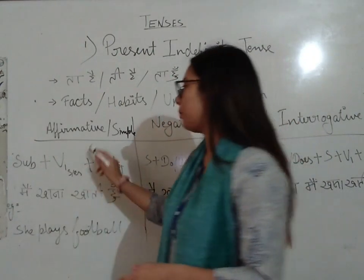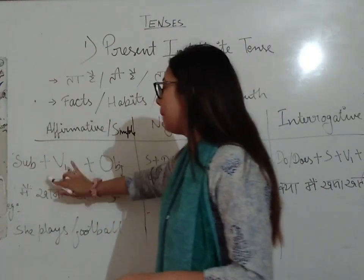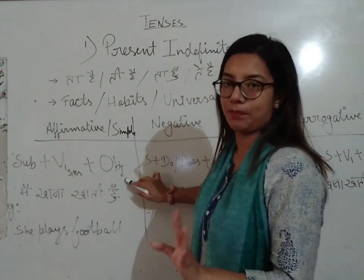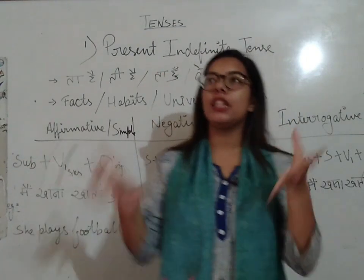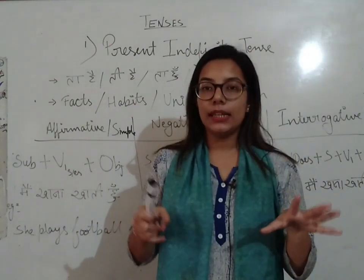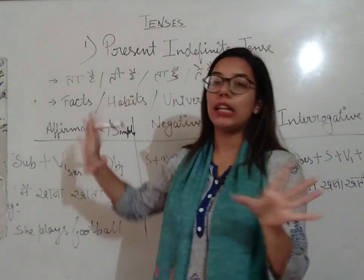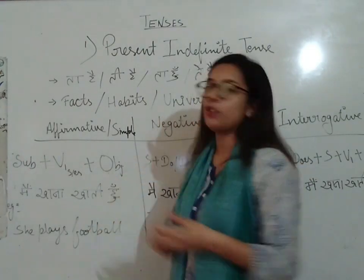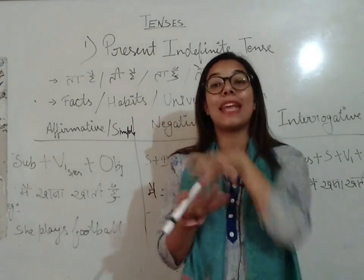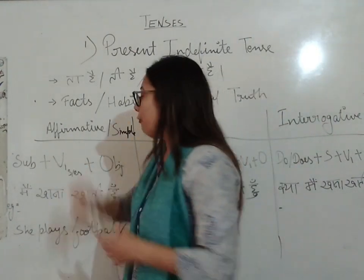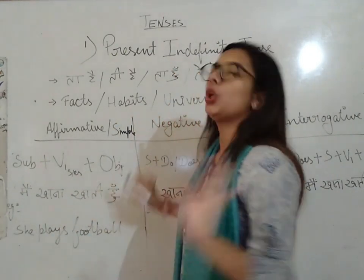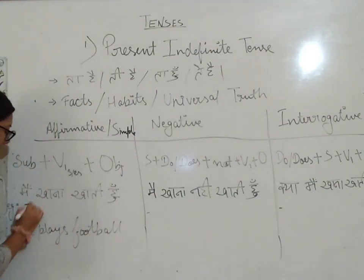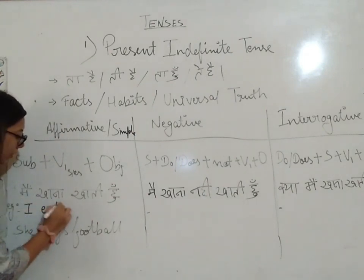For Present Indefinite affirmative sentences, the formula is: Subject + Verb's first form (S or ES) + Object. Subjects are: she, he, it, I, we, you, they. Verb means action (kriya). For example, 'main khaana khaati hoon' in English becomes 'I eat food.' Here, I + eat + food.